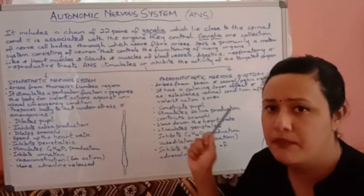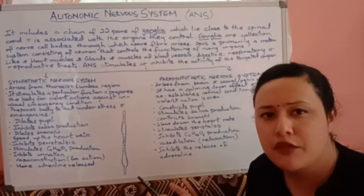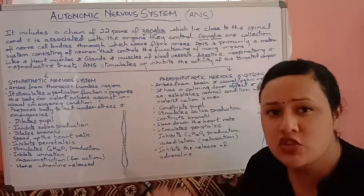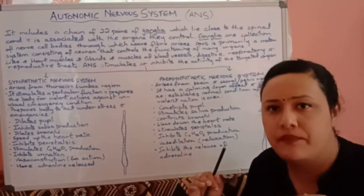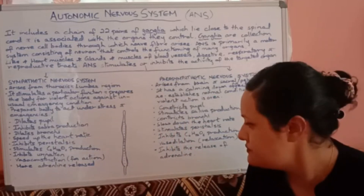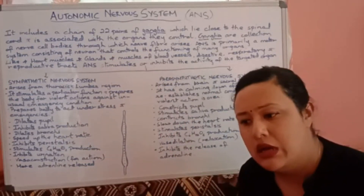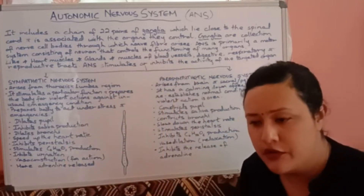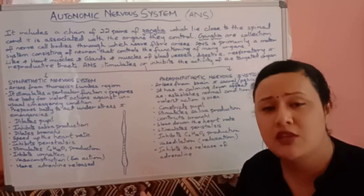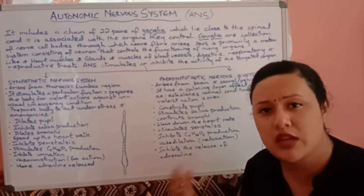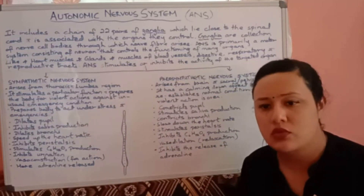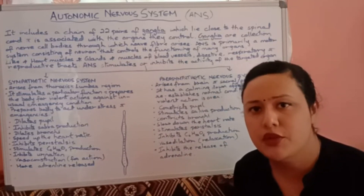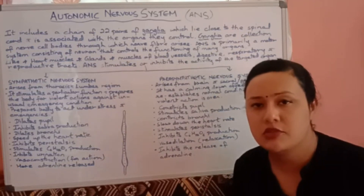So the sympathetic nervous system stimulates the organs under stress, while the parasympathetic nervous system suppresses that activity and returns the body to its normal conditions. With this, we have finished the nervous system — the three divisions: the central nervous system, the peripheral nervous system, and the autonomic nervous system. Additional clips will be shared so you can understand the pictures and details more clearly. If you have any queries, feel free to contact me. Thank you.